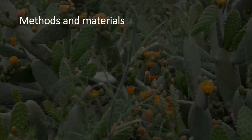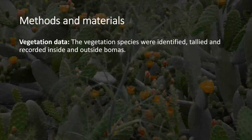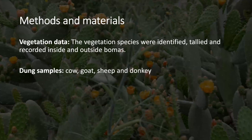The methods and materials involved vegetation data: I identified, tallied, and recorded vegetation inside and outside Bomas, looking at which species were more represented in each location. For dung samples, while some researchers use modern vegetation — taking leaves or roots, burning them and using the ashes — I used cow dung, sheep dung, and donkey dung, because these are the domesticated animals kept by the Dasnach, to see if they represent what I find from the soil.